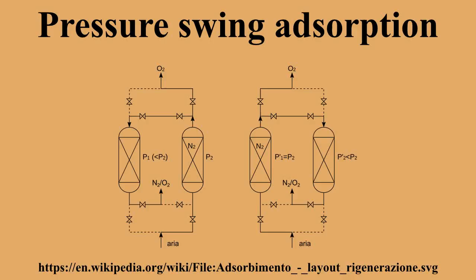If a gas mixture such as air, for example, is passed under pressure through a vessel containing an adsorbent bed of zeolite that attracts nitrogen more strongly than it does oxygen, part or all of the nitrogen will stay in the bed, and the gas coming out of the vessel will be enriched in oxygen. When the bed reaches the end of its capacity to adsorb nitrogen, it can be regenerated by reducing the pressure, thereby releasing the adsorbed nitrogen.